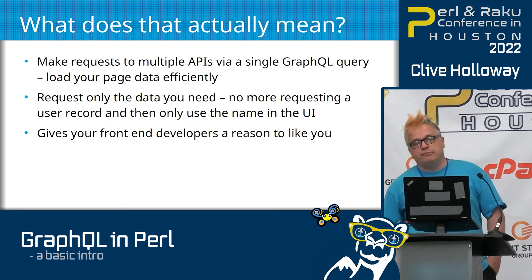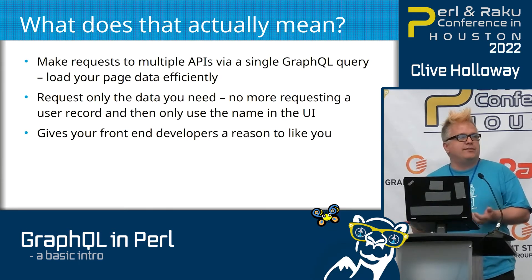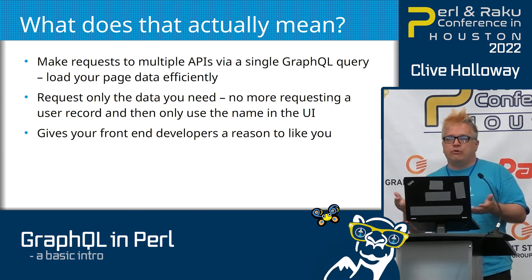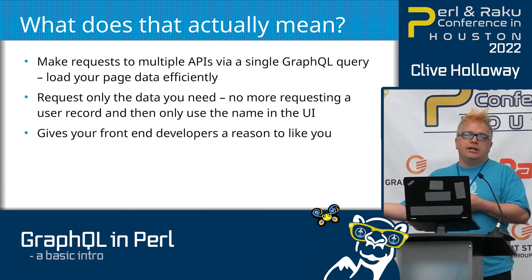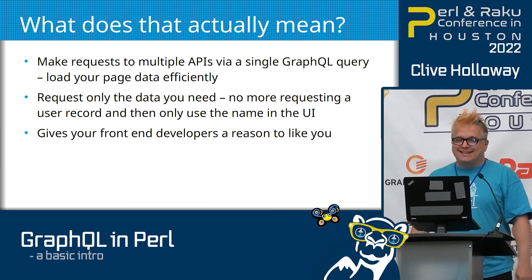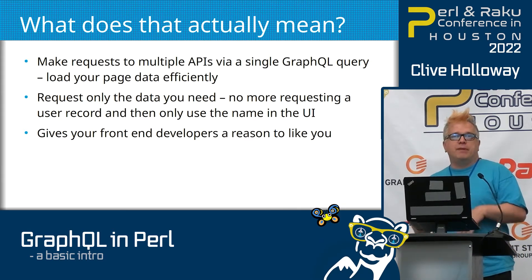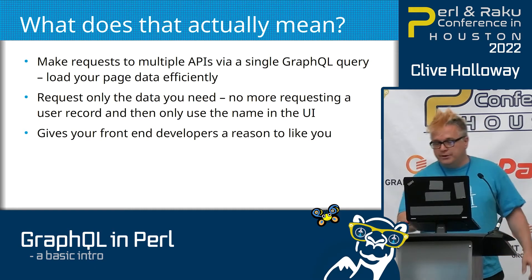Basically what that means is you can make requests to multiple APIs via a single GraphQL query, which can load your page a lot more efficiently, and you only need to get the data that you need. So no more requesting an entire user record from an open API and then just grabbing the name. You just say, I want the user's name or I want the user's email address. And that's a good reason for your front-end developers to like you, because you're making their pages more responsive since you only have a single request going to your back end.